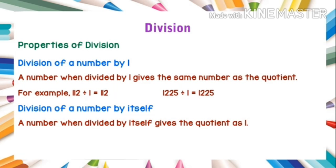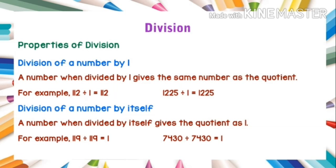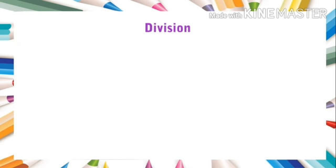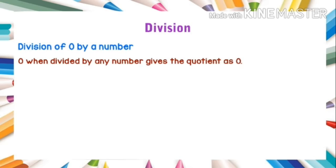Second, division of a number by itself: a number when divided by itself gives the quotient as 1. For example, 119 divided by 119 is equal to 1, and 7,430 divided by 7,430 is equal to 1. Third, division of 0 by a number: 0 when divided by any number gives the quotient as 0. For example, 0 divided by 79 is equal to 0, and 0 divided by 653 is equal to 0.